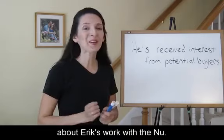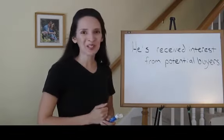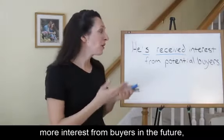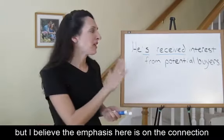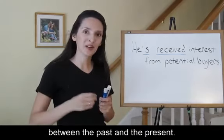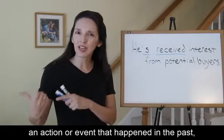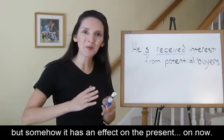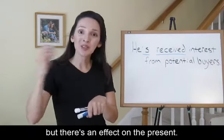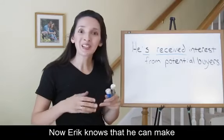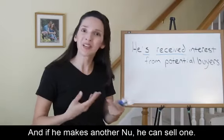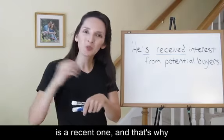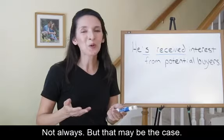He's received interest from potential buyers. Now hopefully Eric will receive more interest from buyers in the future. But the emphasis here is on the connection between the past and the present. We can use the present perfect to refer to an action or event that happened in the past, but somehow it has an effect on the present, on now. Receiving interest happened in the past, but there's an effect on the present. Now Eric knows that he can make more of these instruments, and if he makes another new, he can sell one. Often this event or action in the past is a recent one, and that's why it has some kind of an effect on the present time.